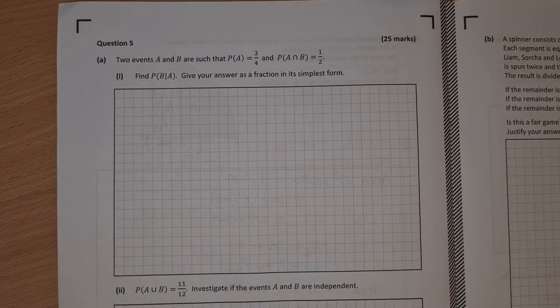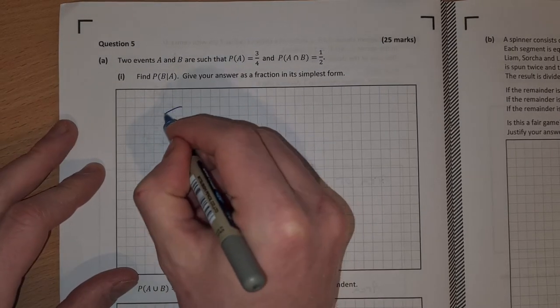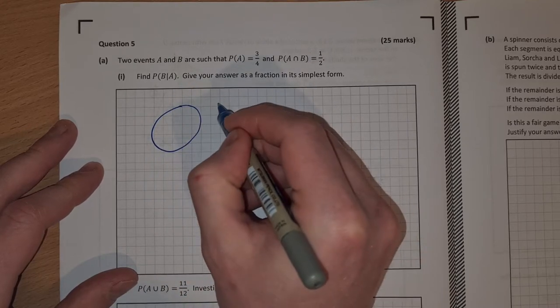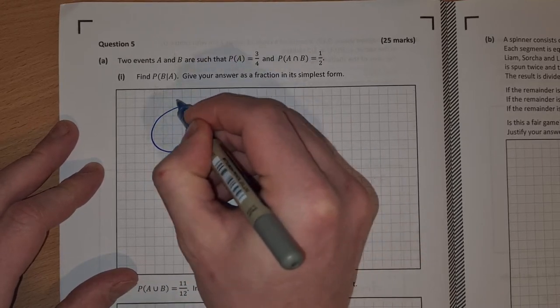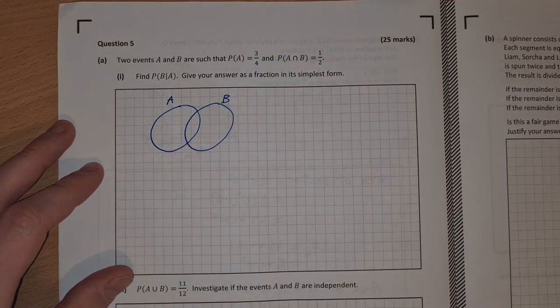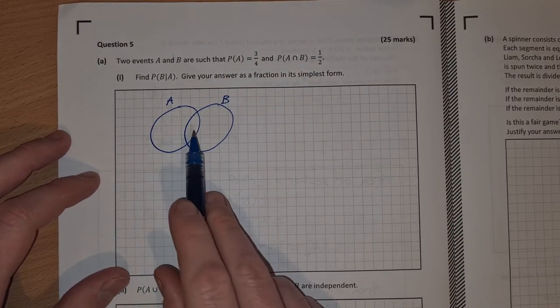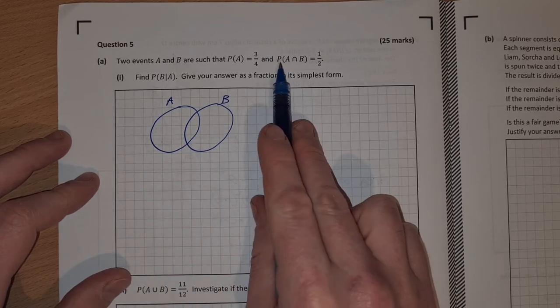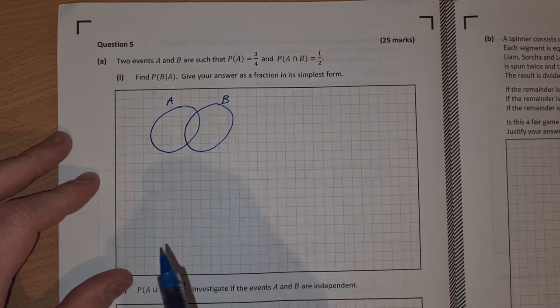So I think the easiest way to do this is to draw a little Venn diagram. So if we draw our Venn diagram here we can have the probability of A happening and we can have the probability of B happening. Now with a Venn diagram we always fill in the intersection first. So the probability of A intersection B is a half.